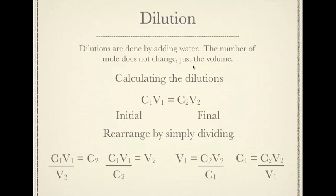All you're doing is adding water to adjust how much volume you have. In terms of calculating using dilutions, we use this formula here, C1V1 equals C2V2, where we have the initial concentration and our initial volume is equal to our final concentration multiplied by our final volume.